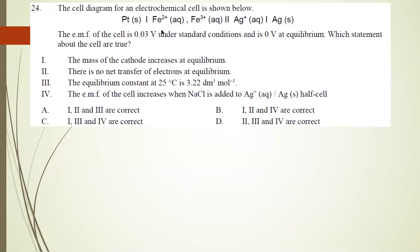Number 24: a cell diagram of an electrochemical cell is shown: Pb | Fe2+, Fe3+ || Ag+, Ag. The EMF of the cell is 0.03 V under standard conditions and zero at equilibrium. Which of the statements about the cell is true? Statement A: the mass of the cathode increases at equilibrium. In this cell, Ag+ | Ag is the cathode, so Ag+ will be reduced to Ag, and the mass of the cathode will increase.